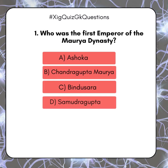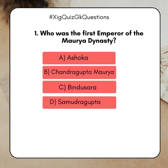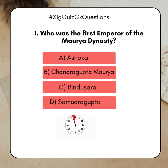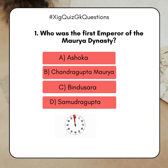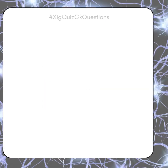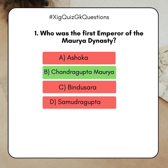Who was the first emperor of the Maurya dynasty? A. Ashoka. B. Chandragupta Maurya. C. Bindusara. D. Samudragupta. Answer: B. Chandragupta Maurya.